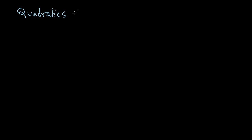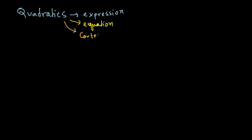Quadratics refer to many things. It can refer to an expression, so we call it a quadratic expression. Then it can refer to an equation, we call it a quadratic equation. Then it could be a quadratic Cartesian equation — there is another type of equation called a Cartesian equation, which is basically a picture. And a quadratic inequality.